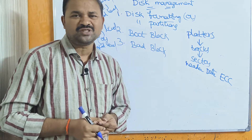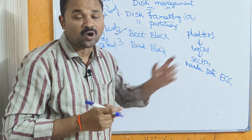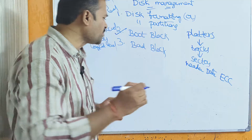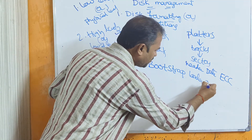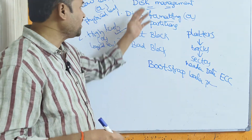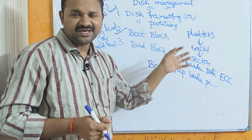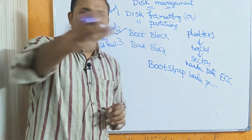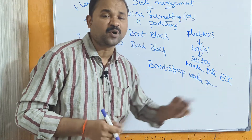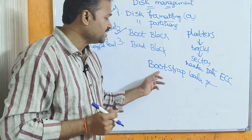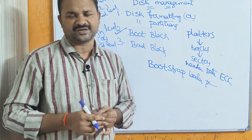The second aspect is boot block. The hard disk is divided into various partitions. The first partition is called the boot block. The boot block mainly contains a program called the bootstrap loader program. Whenever we start the computer, the bootstrap loader program is executed and it initializes all aspects of the computer.